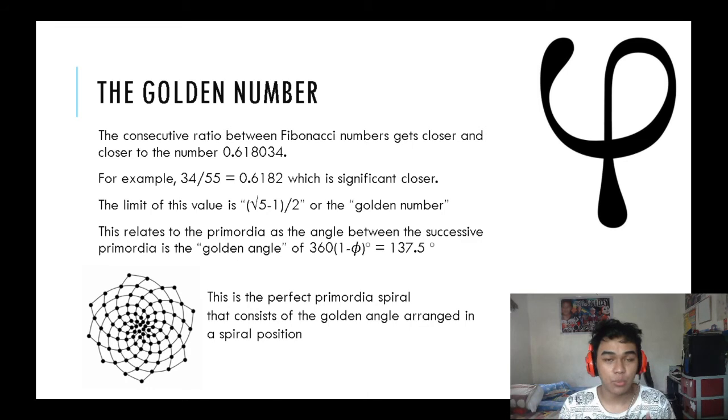Lastly, we have the golden number. I talked about the golden ratio by Da Vinci, which is 1.618, but the golden number is basically derived from the Fibonacci numbers, the ratio between two numbers that is really close to 0.618034. Remind that number because that's the exact number of the Fibonacci number ratio. As the Fibonacci numbers go further, it gets closer to that number, and as it gets closer it becomes this thing called the golden ratio, hence being called the golden number. As you can see here, the limit value here is square root of 5 minus 1 divided by 2, also called the golden number. That's how they got it.